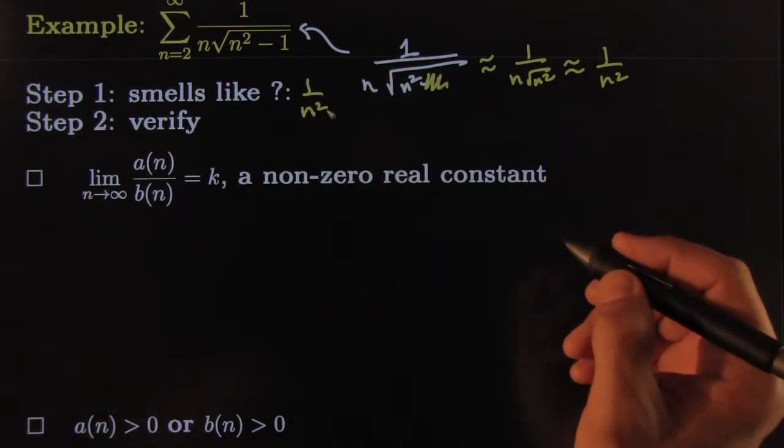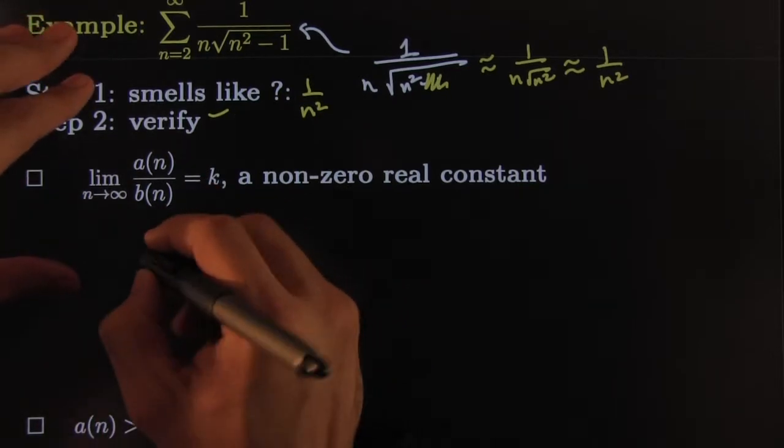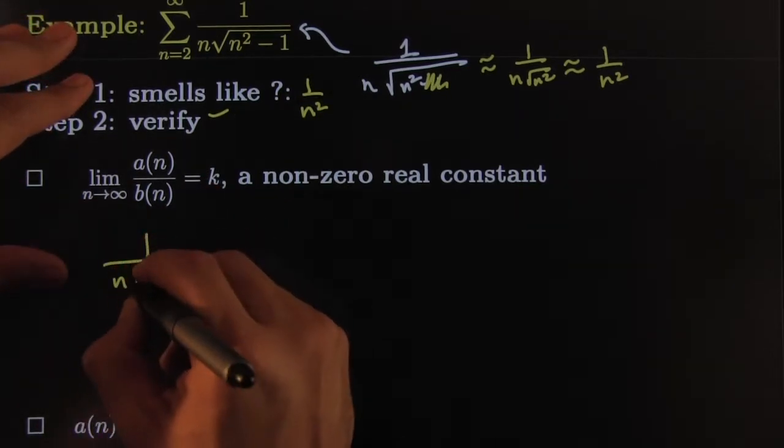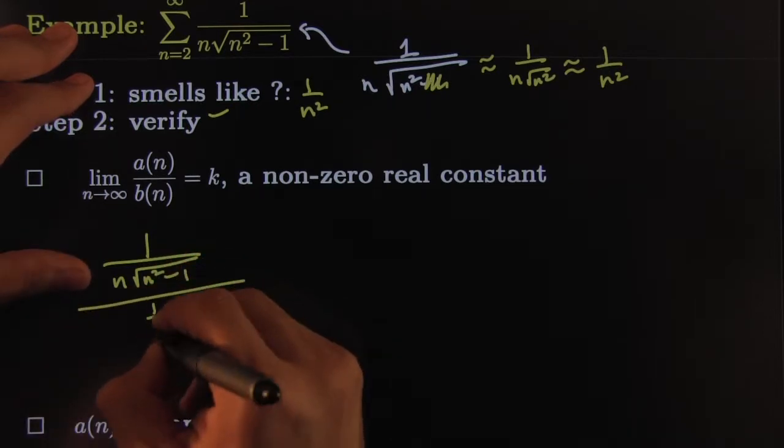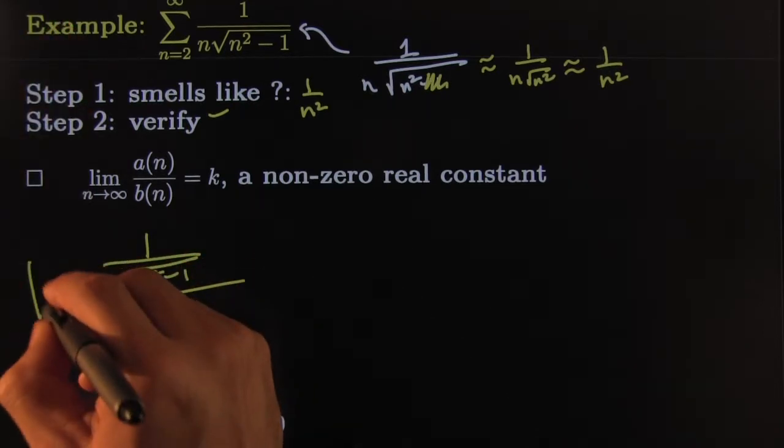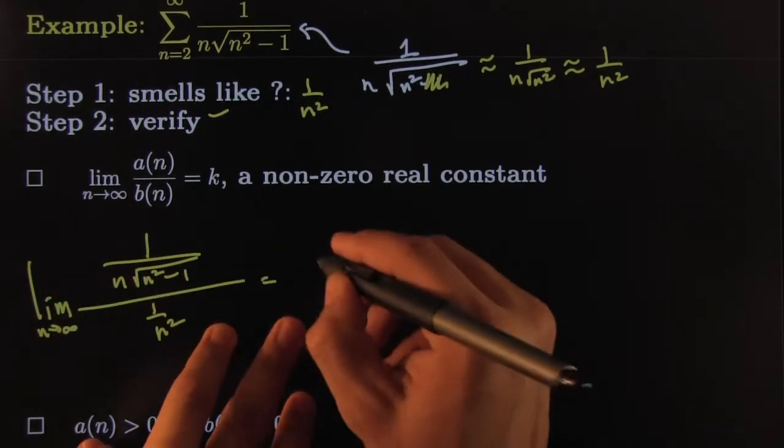That's my hypothesis: it smells like 1 over n squared. Now we need to verify, that would be the verification step. So I go like this: 1 over n times the square root of n squared minus 1, all over 1 over n squared. And of course I'm slapping the limit here as n goes towards infinity. Let's check it.